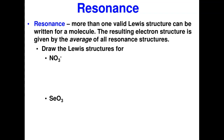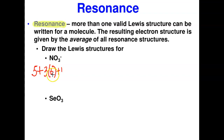An important concept in Lewis structures is resonance — it is possible for a molecule to have more than one valid Lewis structure. This concept is called resonance. For the nitrate ion NO3-: nitrogen in group five gives five electrons, plus three oxygen atoms times six is 18, plus one for the negative charge. Five plus 18 plus one gives 24 valence electrons.